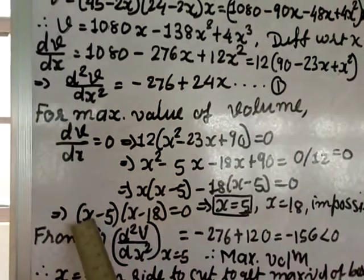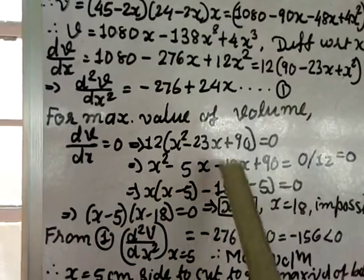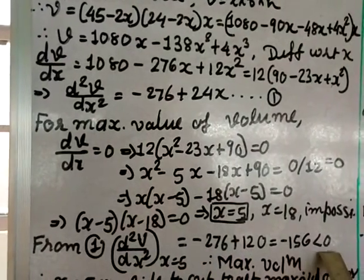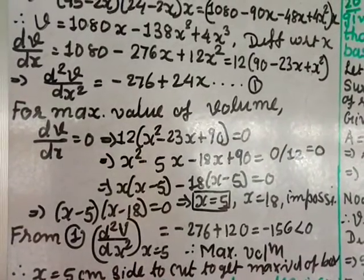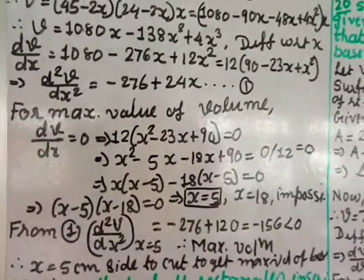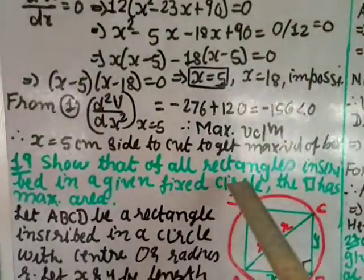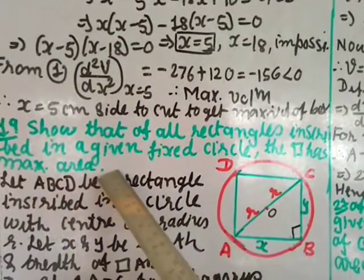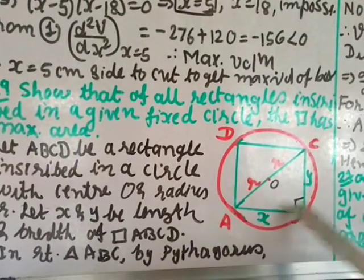x equals 18 is not possible given the dimensions, so we take x = 5. Substituting x = 5 into the second derivative gives a negative value, confirming maximum volume. Therefore, the side of the square to be cut off should be x = 5 centimeters to get the maximum volume of the box.